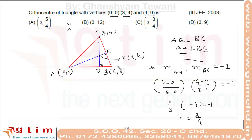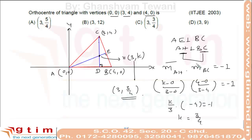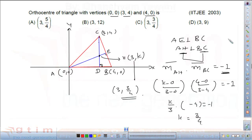So the orthocenter is (3, 3/4). The key concept used here is: when two lines are perpendicular, the product of their slopes is minus 1. This is a very important tool for finding the orthocenter of a triangle.